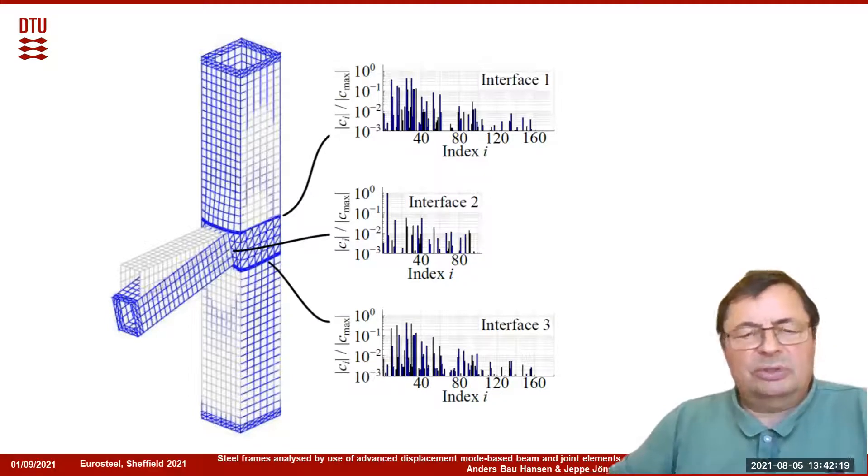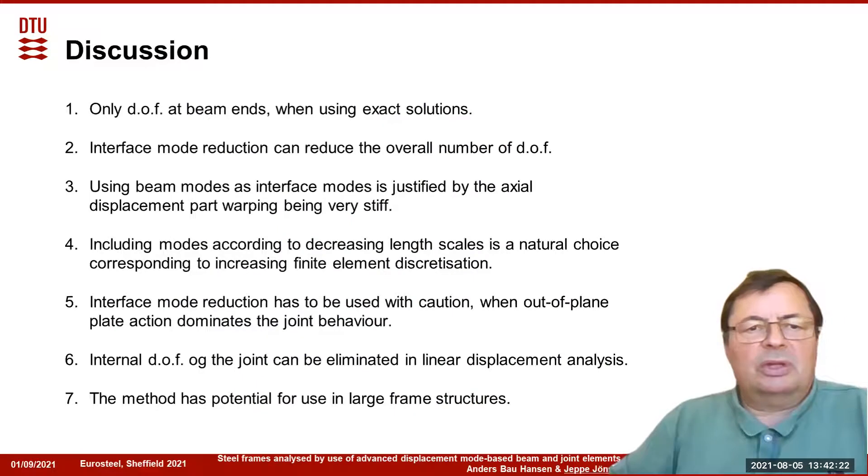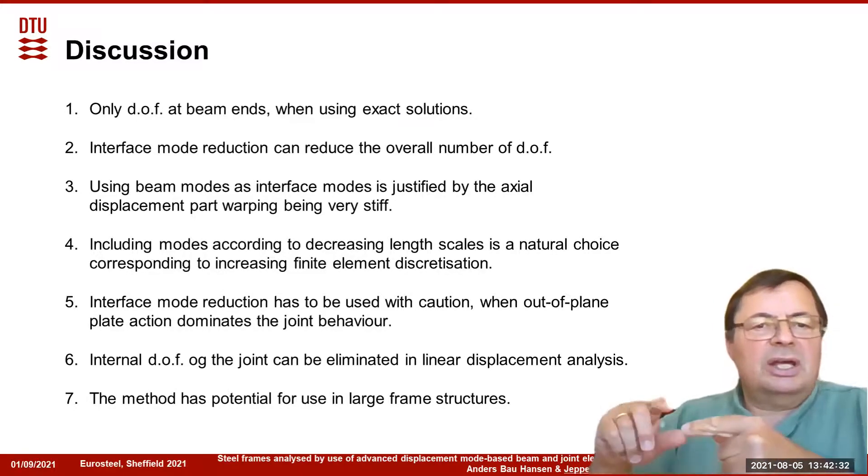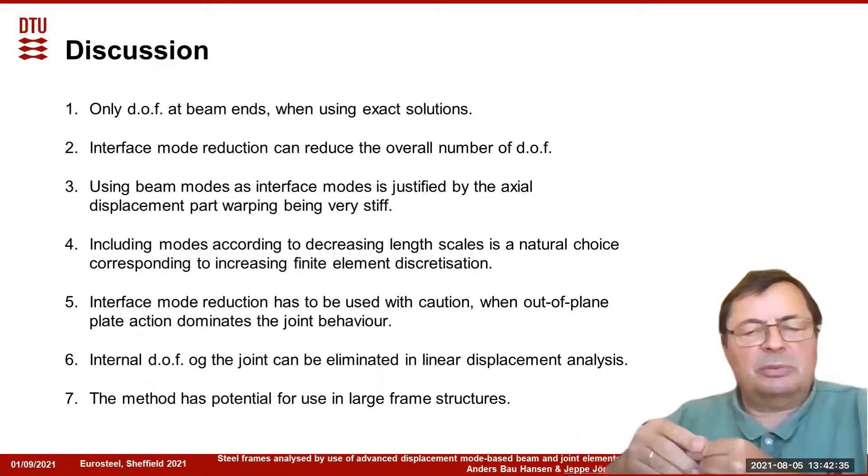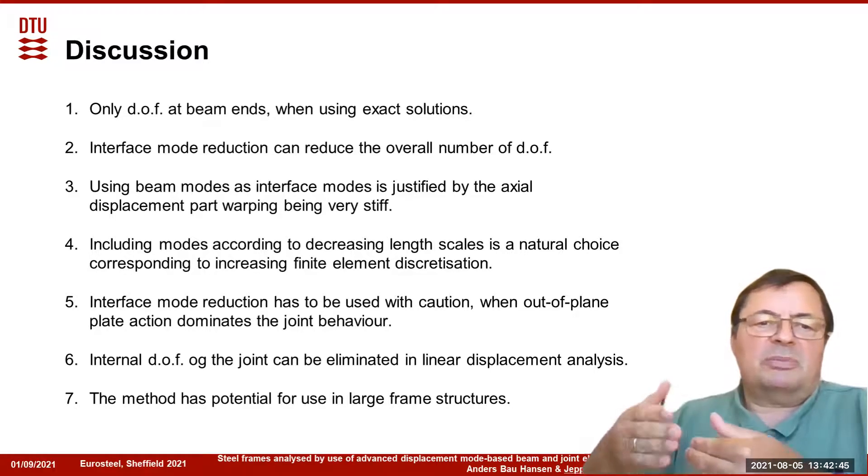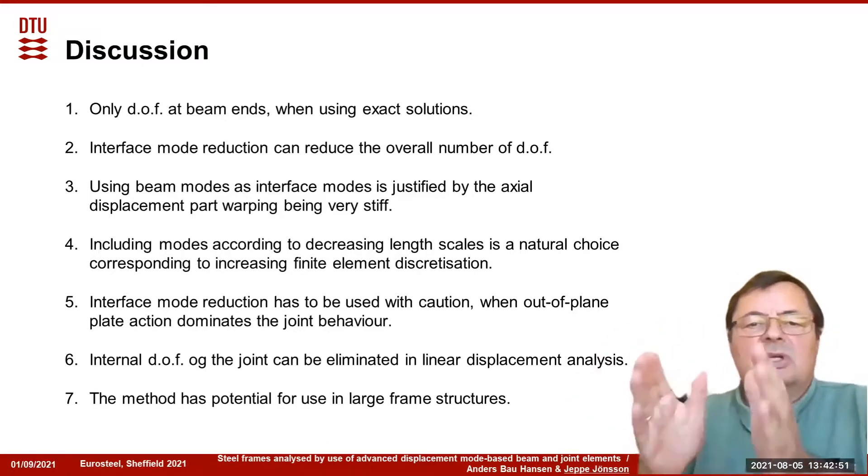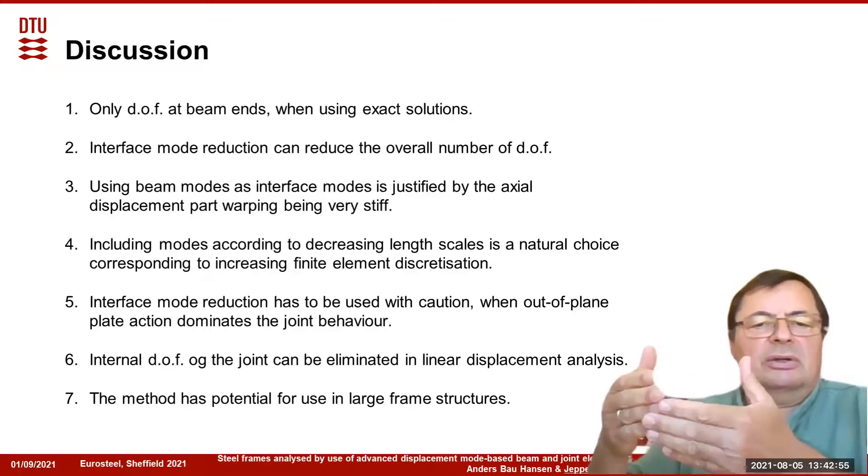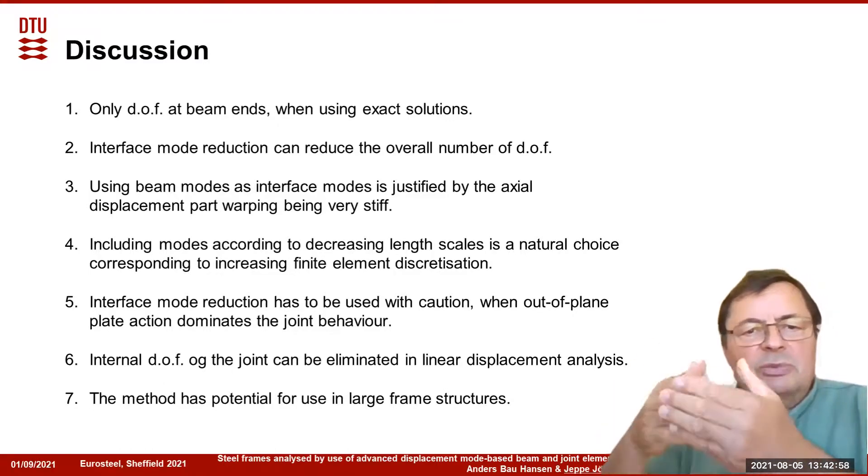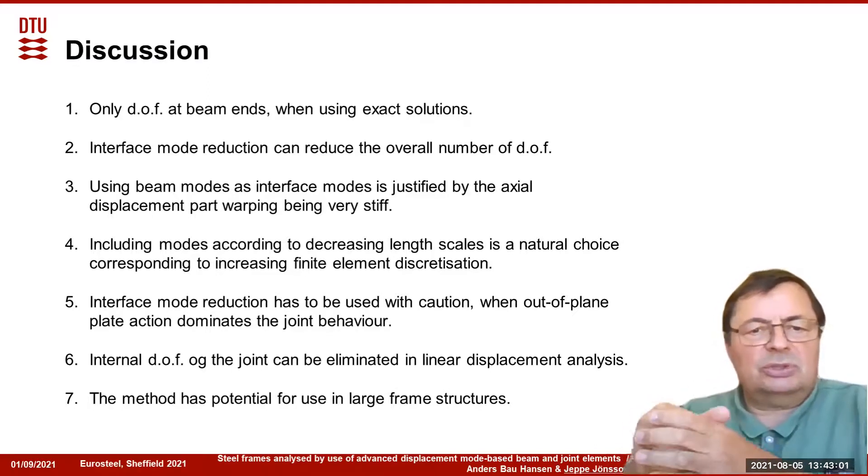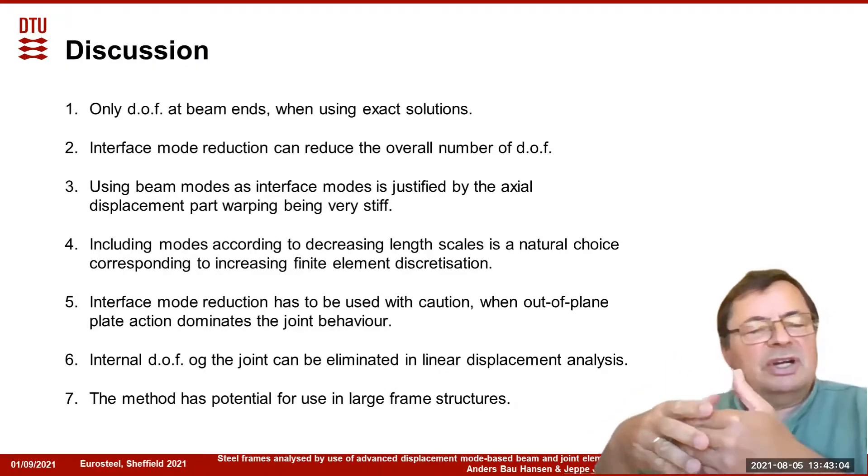To conclude, only the degrees of freedom of the beam ends are used when using exact solutions, which means that we have very few degrees of freedom. Interface mode reduction can reduce the overall number of d.o.f. even more. Using beam modes as interface modes is justified because they are related to the actual part of the warping of the beam. The beam has a lot of stiffness along the walls, so if this is transferred to the joint, this works very well. Including modes according to decreasing length scales is a natural choice, since it corresponds to increasing finite element discretization.